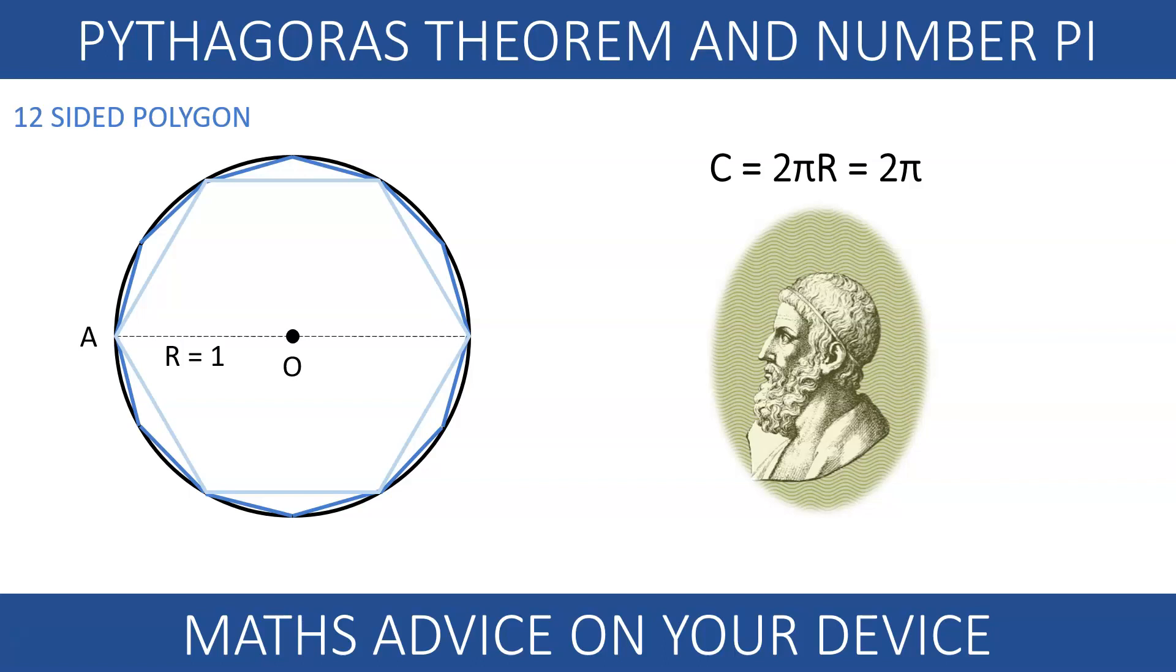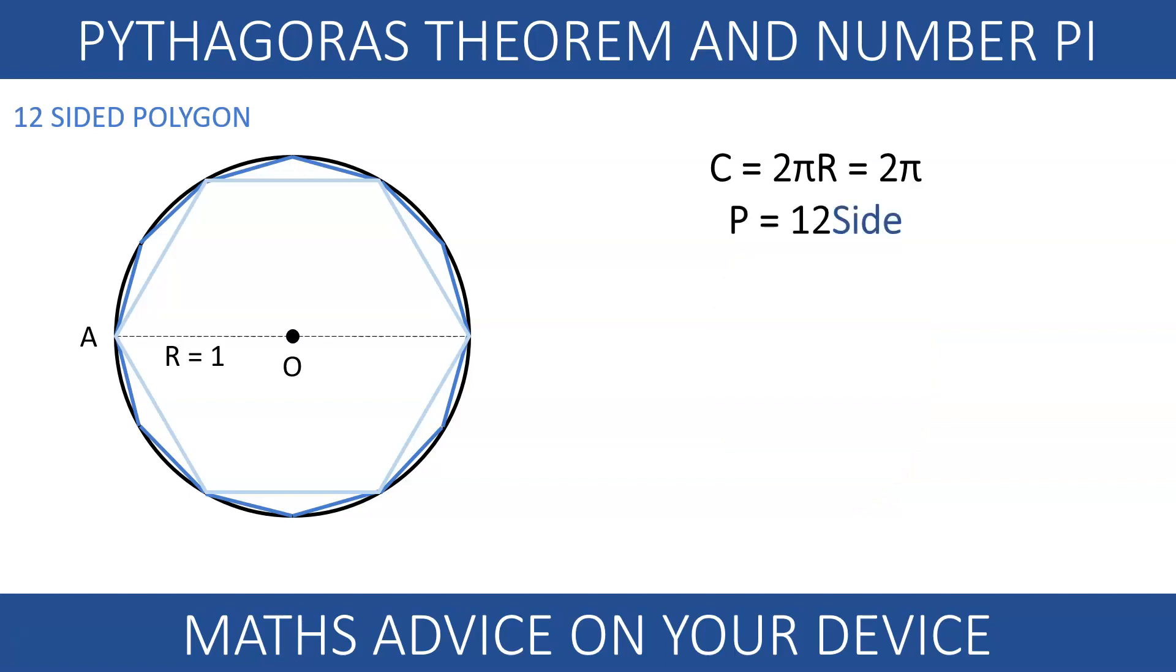Archimedes realized that by dividing the circle into regular polygons with more sides he could get a better approximation. And so he did. Drawing a 12-sided regular polygon inside the circle and multiplying the length of each new side by 12 will give us a better approximation for the circumference. The first step is to halve the previous side AB. The length is 0.5.